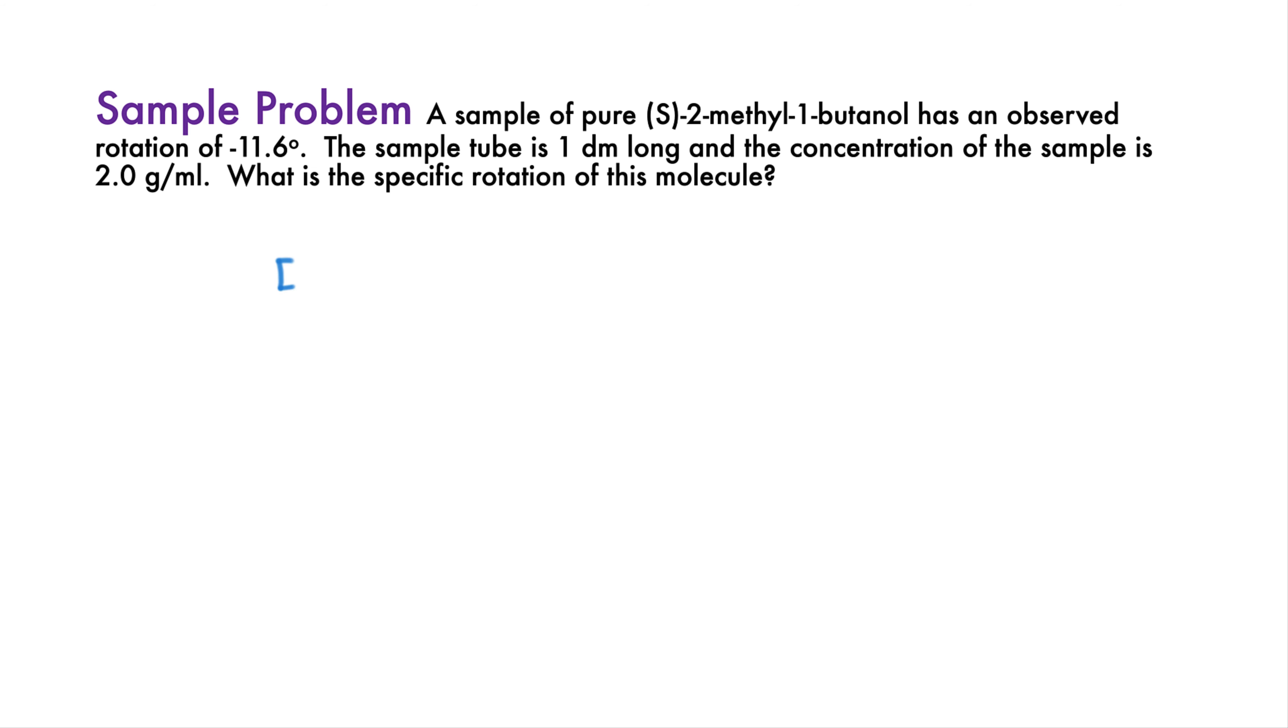The equation for specific rotation is the observed rotation divided by both the concentration of the sample in grams per milliliter, and the sample tube length in decimeters. This sample has an observed rotation of minus 11.6 degrees, which is divided by 2 grams per milliliter, and also divided by 1 decimeter sample tube length. The specific rotation is minus 5.8 degrees. Again, this is the standardized value you would report in the scientific literature. Don't worry about reconciling the units. The final value is always reported in simple degrees.